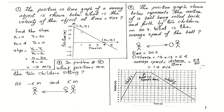You will notice that this position-time graph is represented by a straight line, which tells us that the velocity does not change during this motion. To find the velocity, we find the slope of this straight line. Remember: slope equals the difference in y divided by the difference in x — y2 minus y1 divided by x2 minus x1.